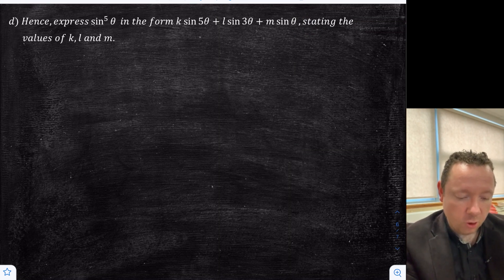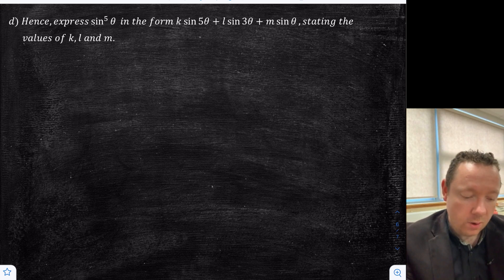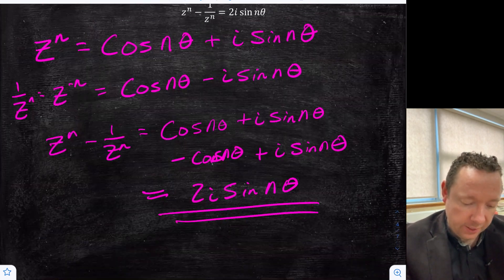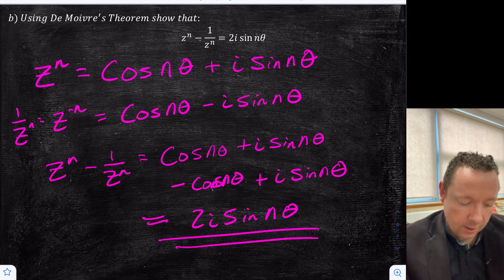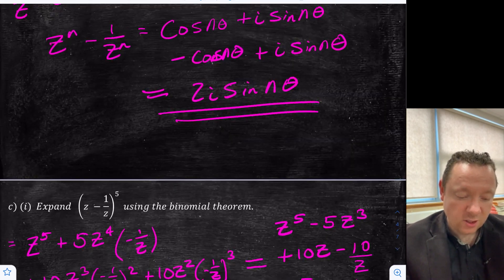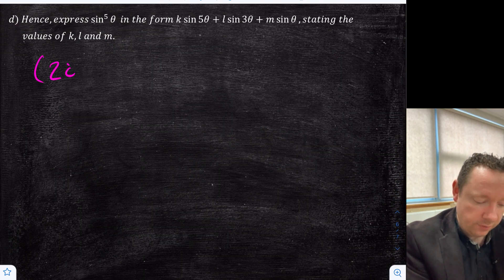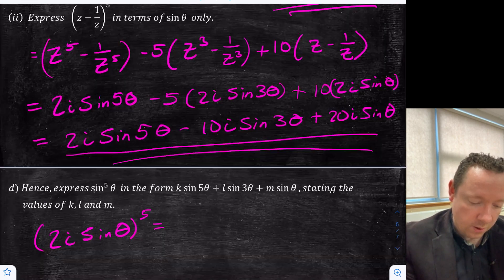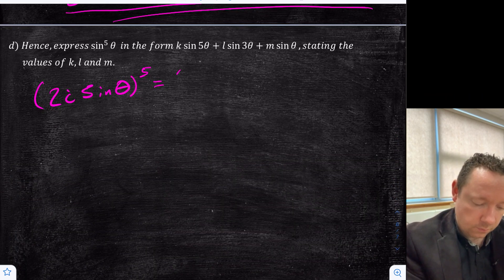Part D: hence express sin^5 θ in the form k sin 5θ + l sin 3θ + m sin θ, stating the values of k, l, and m. We've done all this work, so if we go back to part B, if I work out (2i sin θ)^5, that'll be the same as (z − 1/z)^5, because z^n minus 1/z^n equals 2i sin nθ when n = 1. And we know that (z − 1/z)^5 equals the previous result, so these will be equal. So let's write that out.